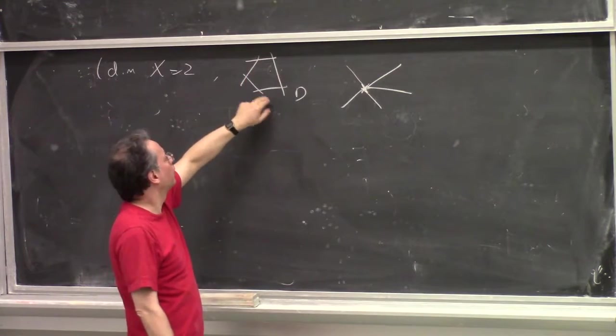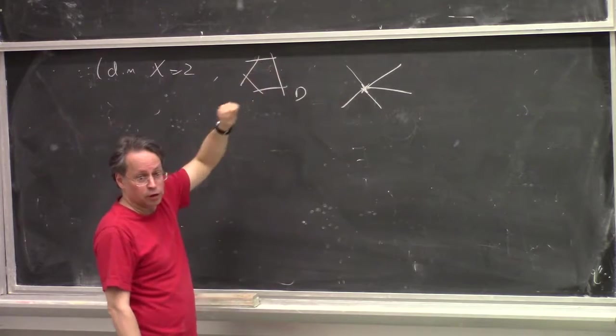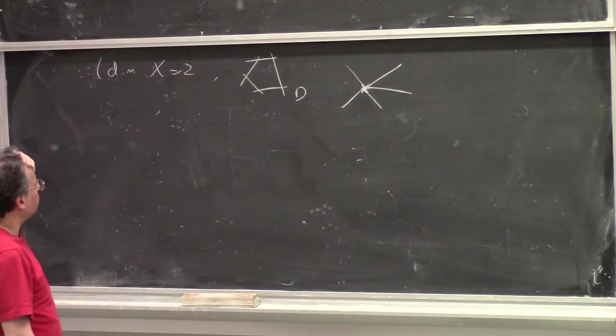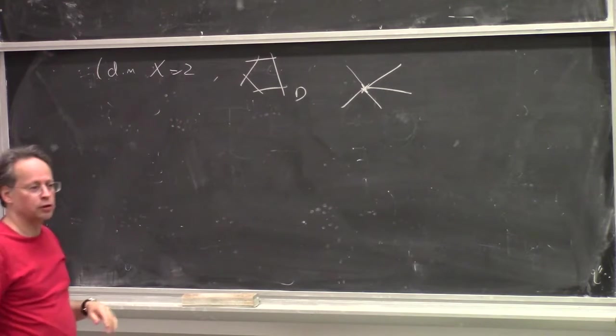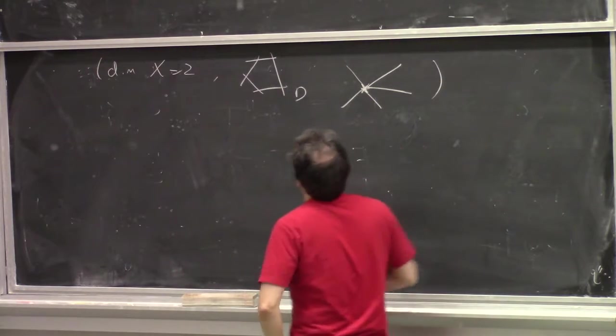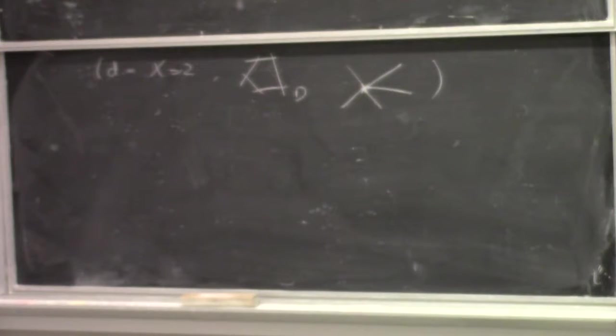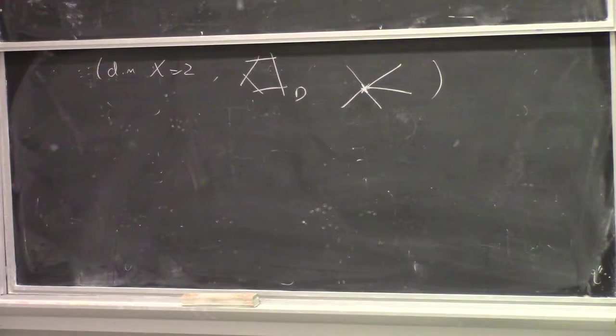So this is kind of a purely combinatorial gadget that you can associate to this pair. It only depends on the intersection numbers, self-intersection numbers, of the irreducible components. And in fact, you can do that in all dimensions. It's not very hard. So that's the zero step.